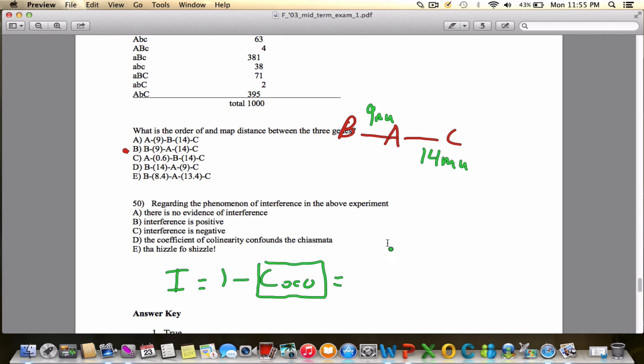So how do we calculate coefficient of coincidence? Well, that is equal to the number of observed double crossovers divided by expected double crossovers. How do we calculate the observed? Well, that's already kind of given to us. So I know what my observed is. It's 2 plus 4, so that's 6.